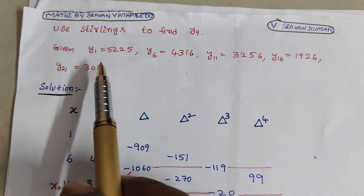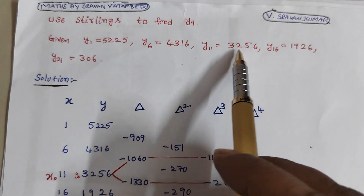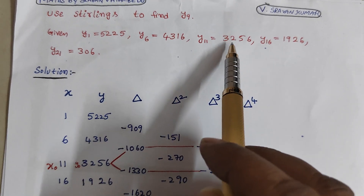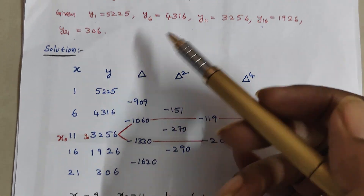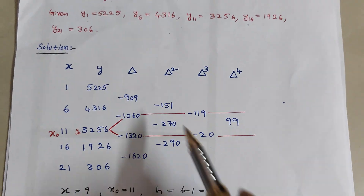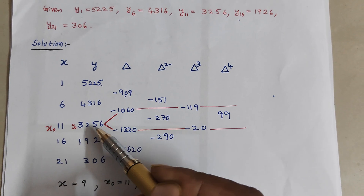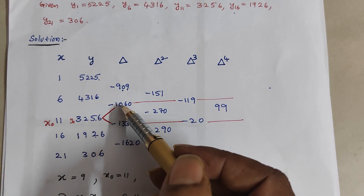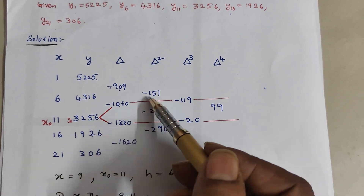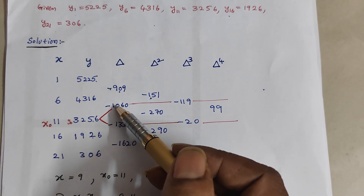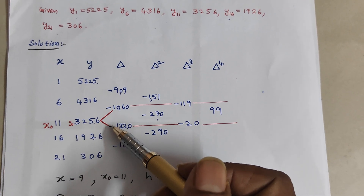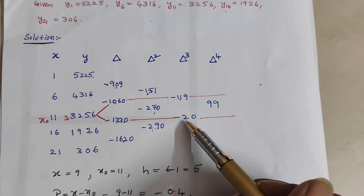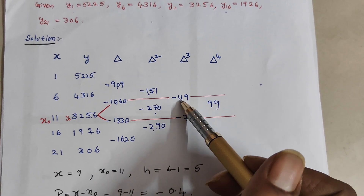Next, coming to Stirling's formula. We have y1, y6, y11, y16, y21. Set up a table with x values and y values. Calculate the differences: this value minus this value, and so on. Computing: minus 20 plus 19 and similar differences. For Stirling's marking, decide x0 first.